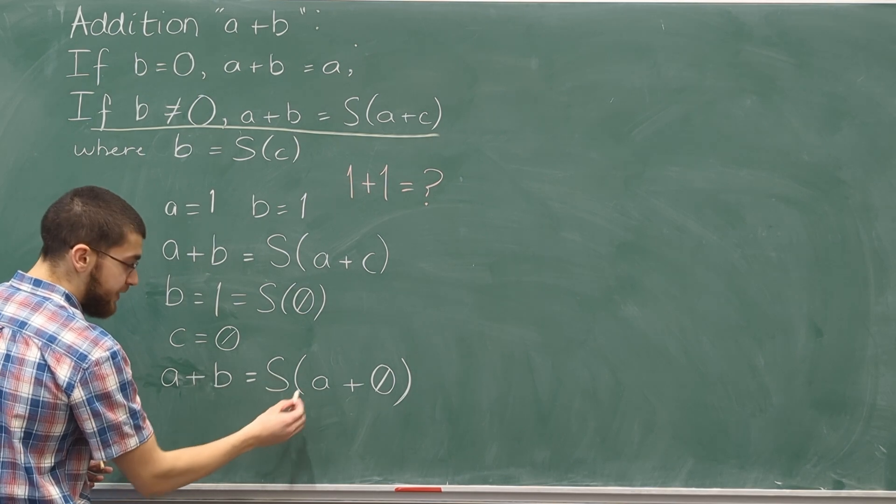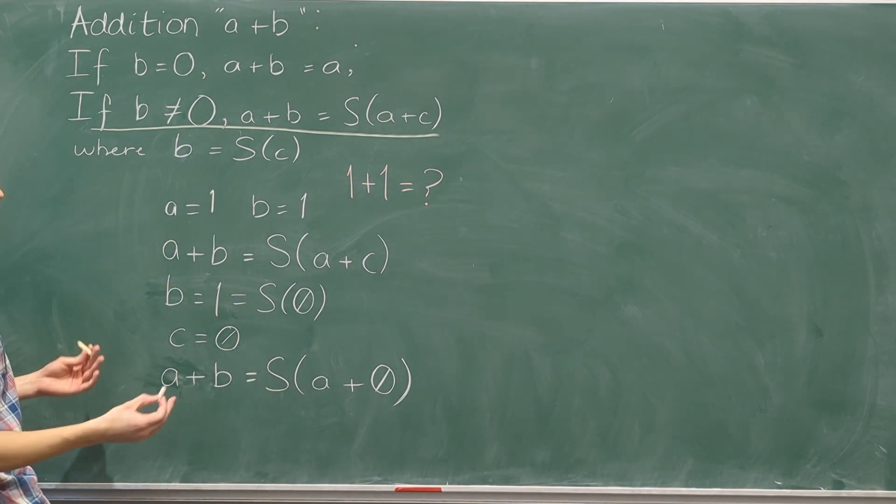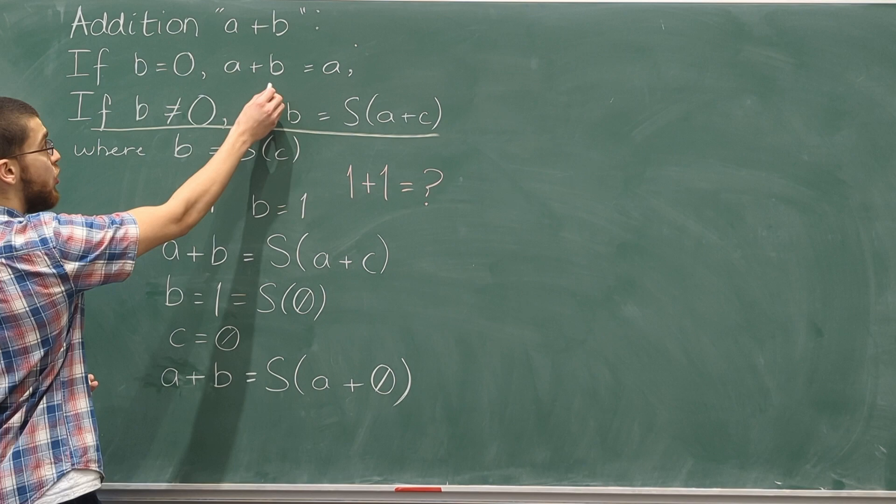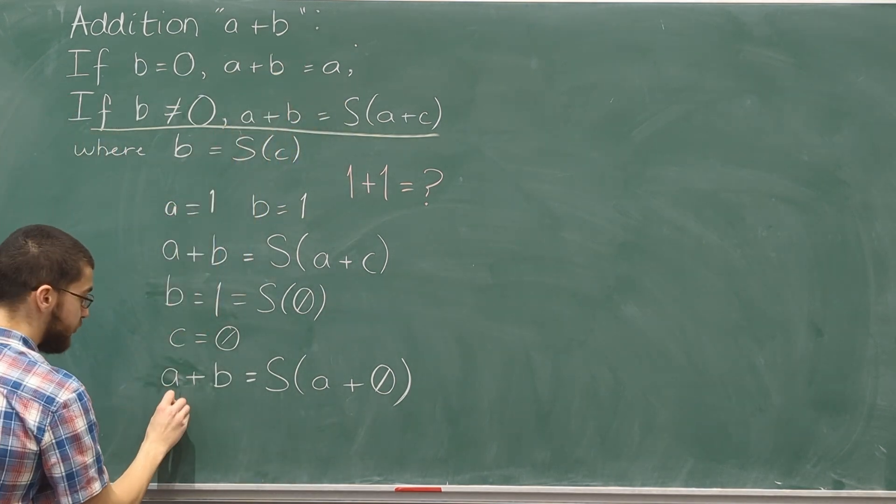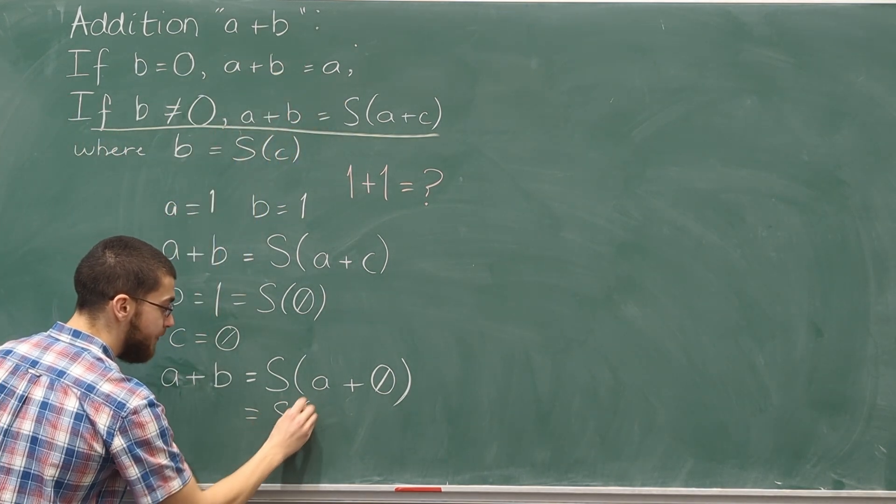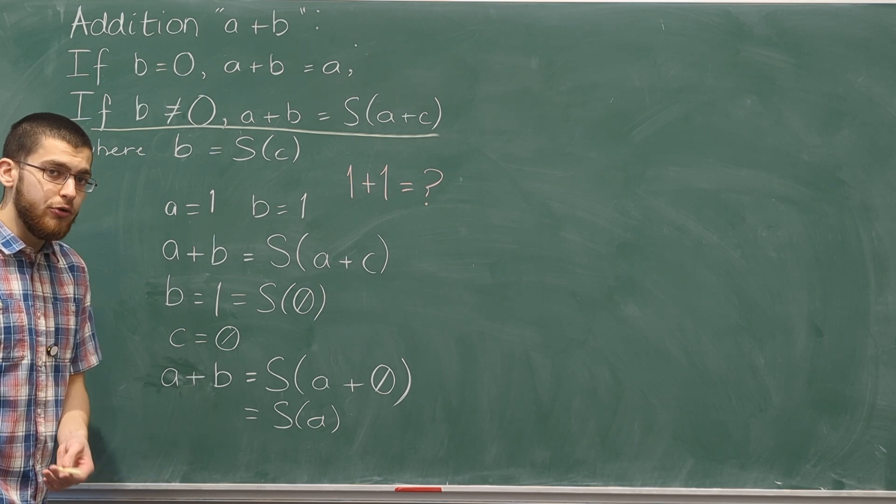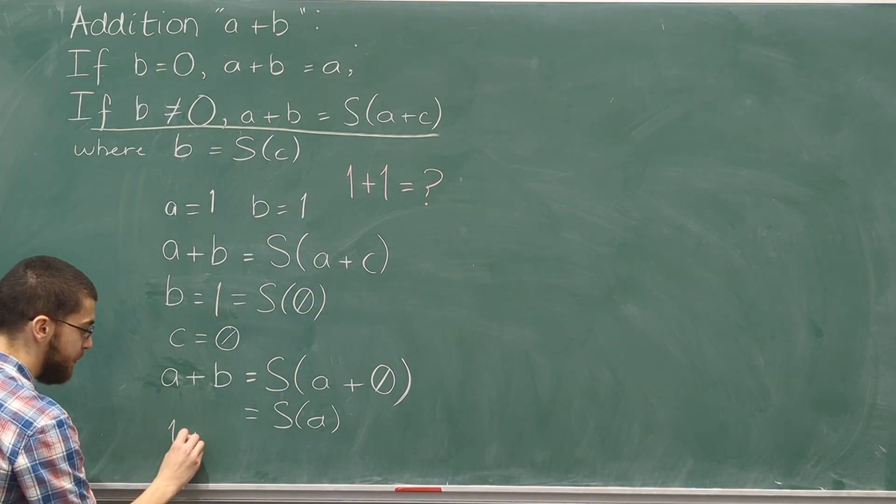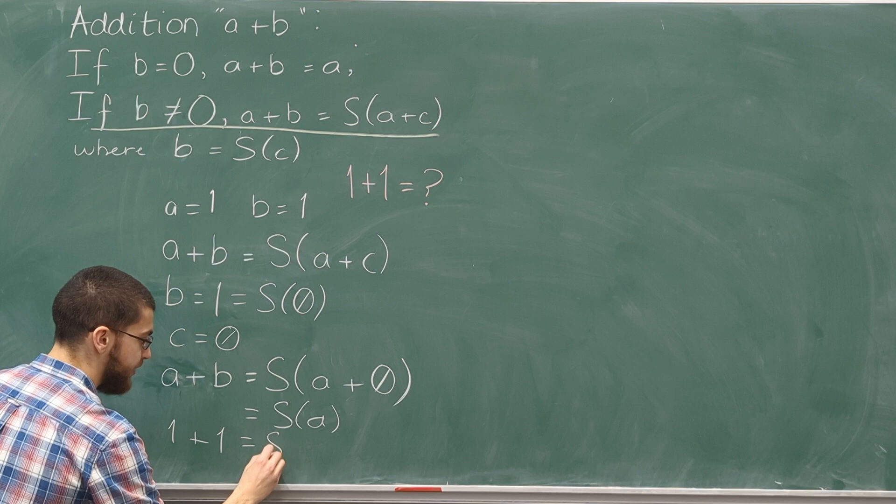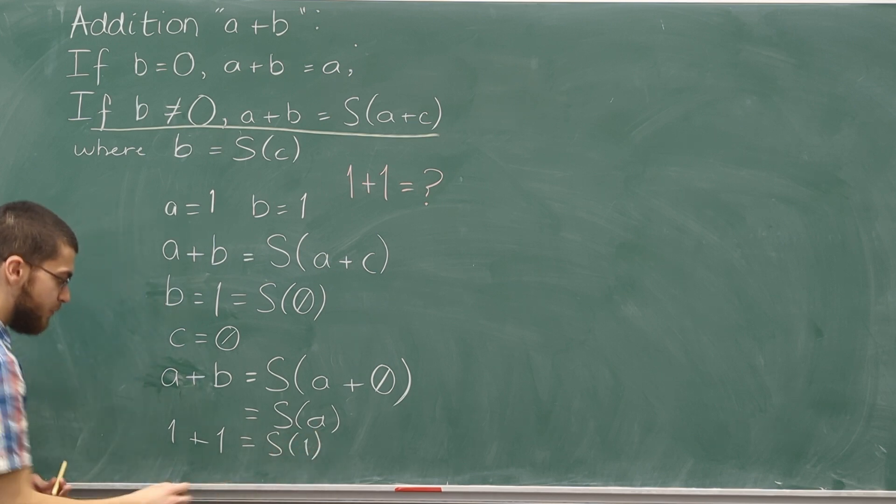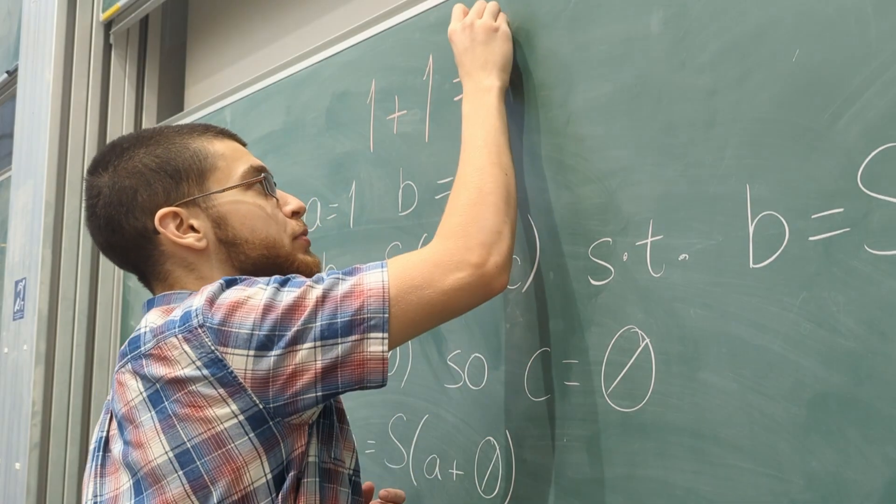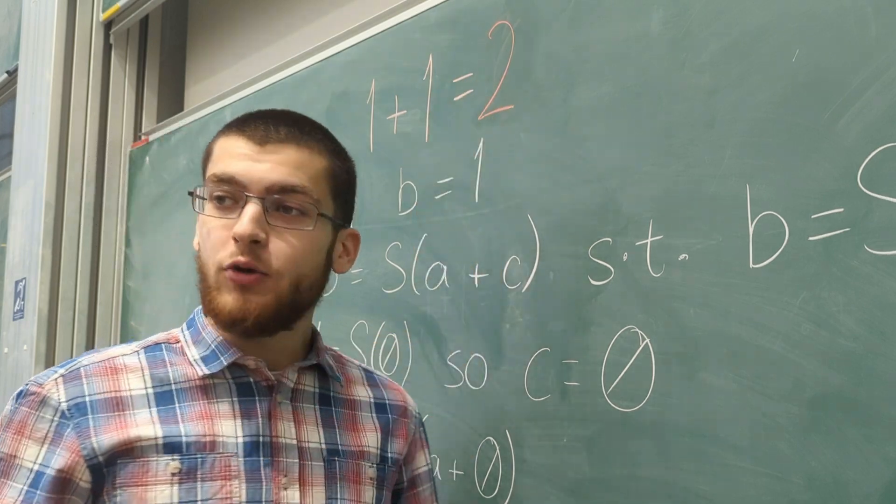So a plus b must equal the successor of a plus zero. According to our definition of addition, a plus zero is just a. So a plus b equals the successor of a. So finally, we can just plug the numbers in. a is one plus b is one, which equals the successor of one. The successor of one is two. And that is how you prove that one plus one equals two.